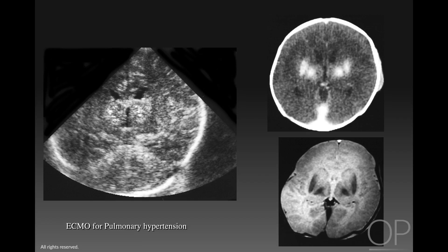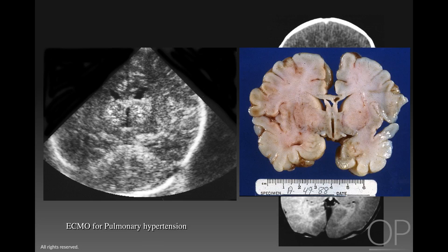This child has very similar echogenic lesions in both the putamina and globus pallidus, as seen on ultrasound and postmortem CT and MRI. This child was treated with ECMO for pulmonary hypertension, and at pathology we expected to see focal hemorrhages. However, there was no gross abnormality, and only on microscopic analysis did we see that these were related to microcalcifications. Microcalcifications can occur secondary to ischemia after one to several weeks post-insult, resulting in diffuse and focal echogenic lesions throughout the deep white matter.